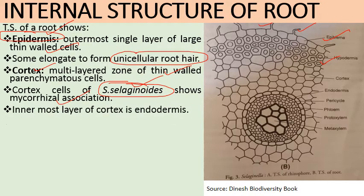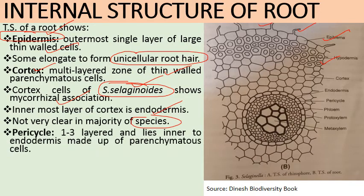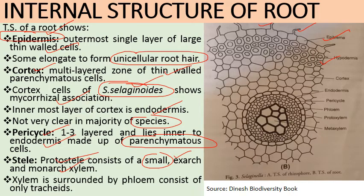The innermost layer of cortex is endodermis — single layered, though not clear in some species. Pericycle is one to three layered, made up of parenchymatous cells. The stele is a protostele consisting of small, exarch, monarch xylem surrounded by phloem. Xylem consists of tracheids — vessels are absent. Meta xylem tracheids bear scalariform thickening; proto xylem bears annular or spiral thickening.